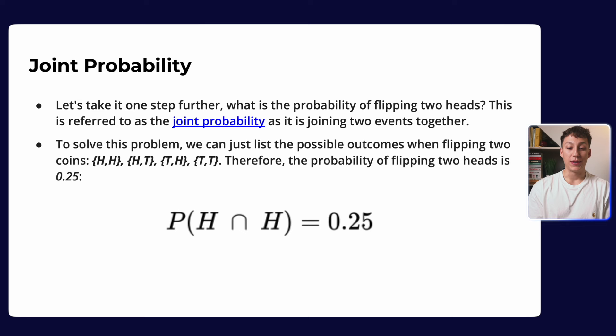An important concept behind joint probabilities is commutativity — being commutative means the probability of A and B is the same as the probability of B and A. Just like three times two equals six, and two times three also equals six — whichever way you split them, the outcome is the same. This will become important later on when we derive Bayes' theorem.